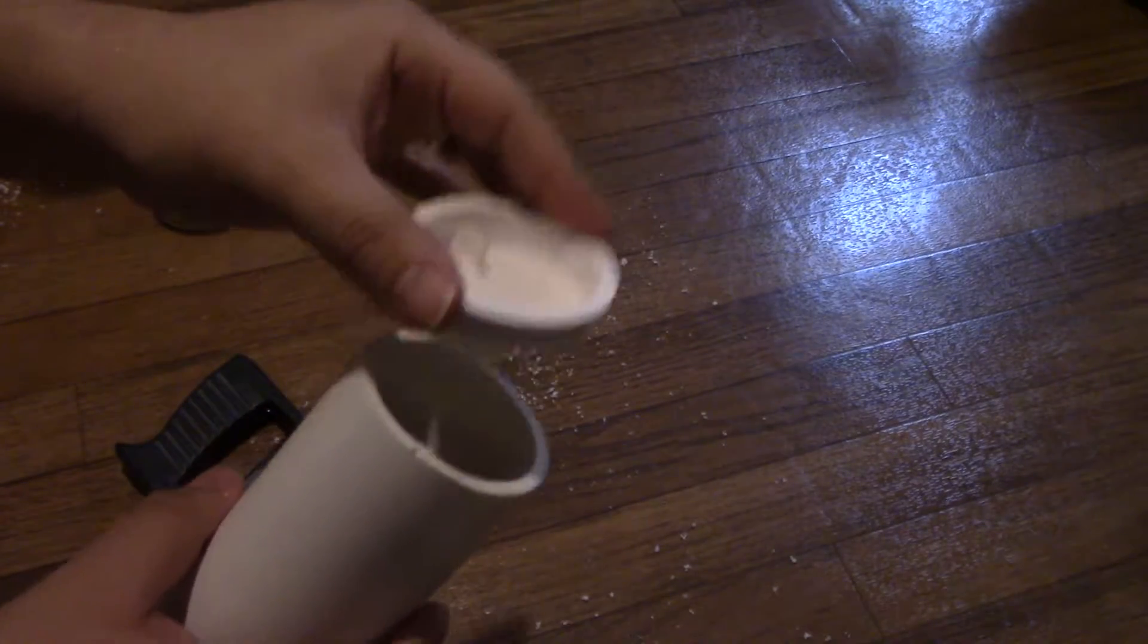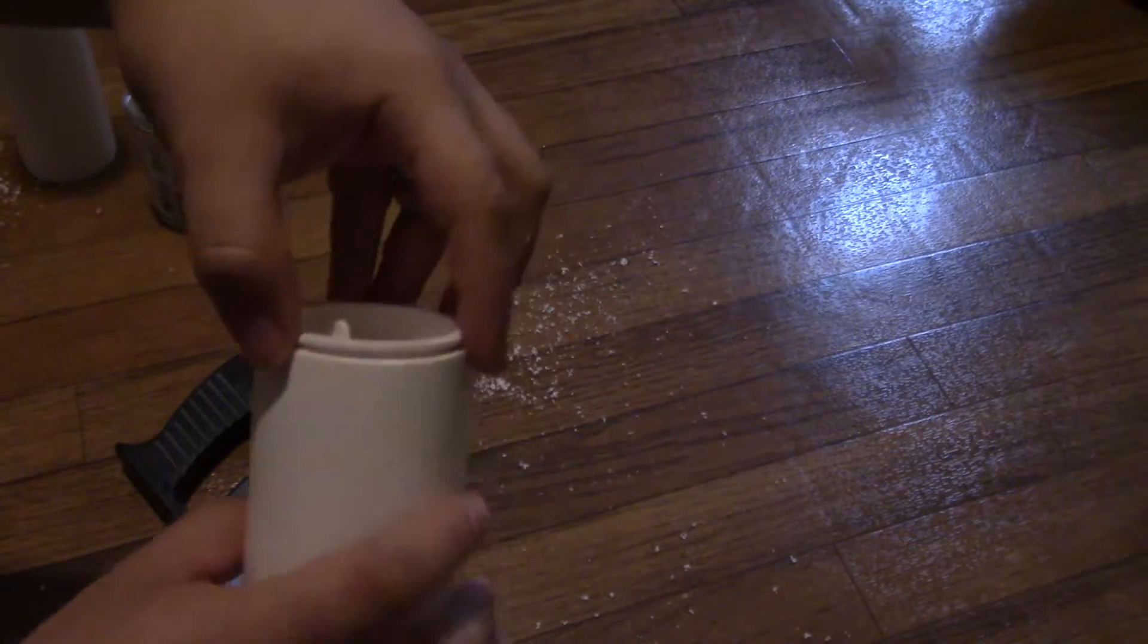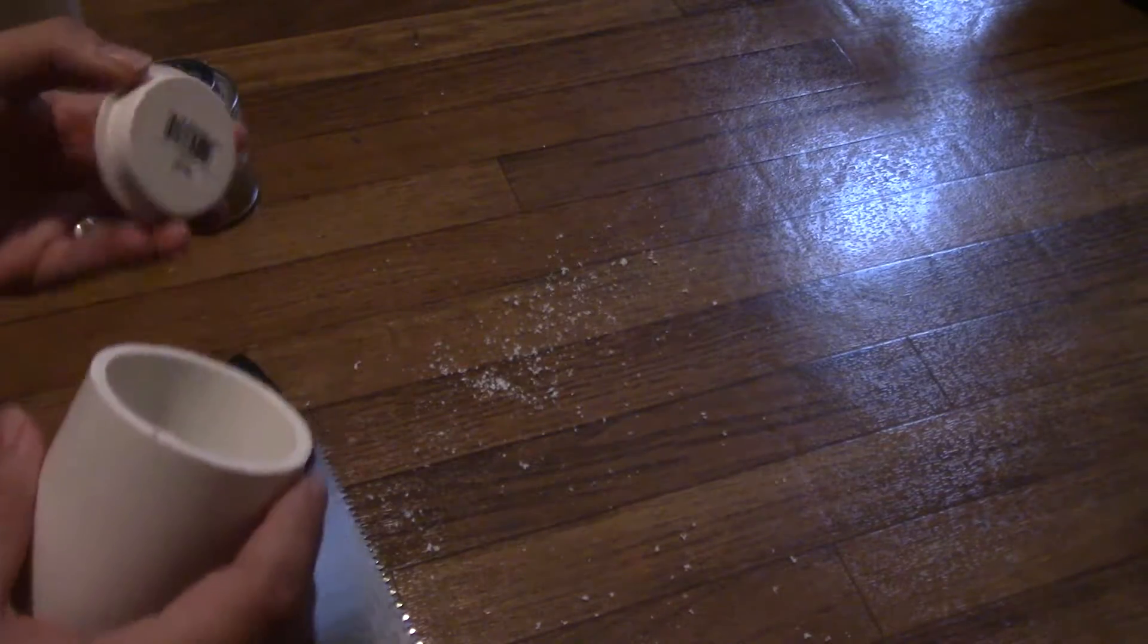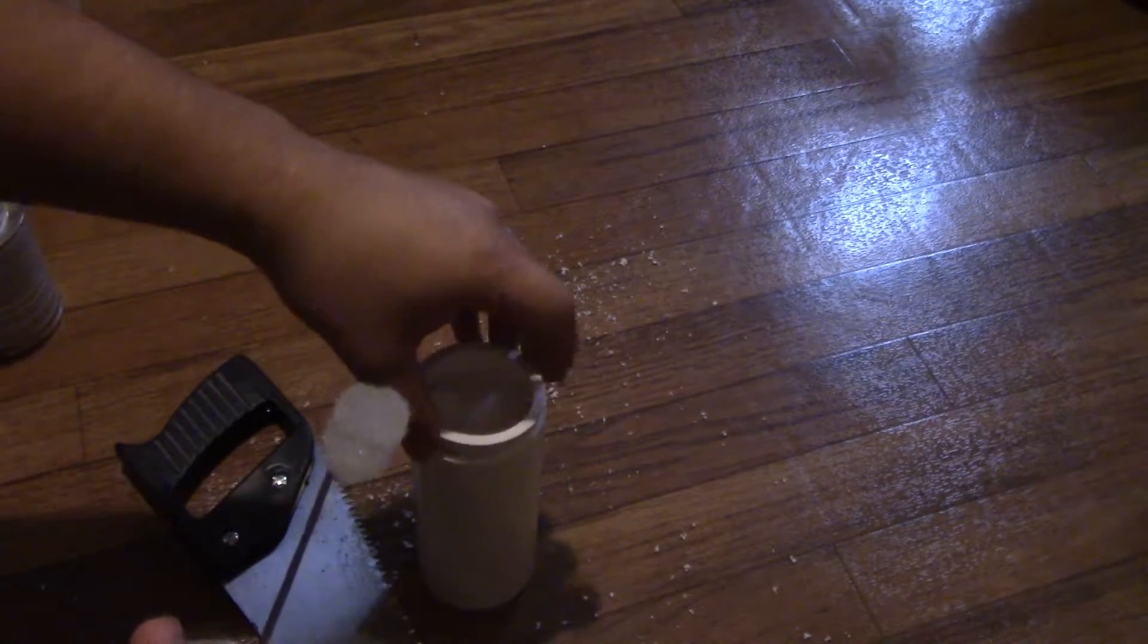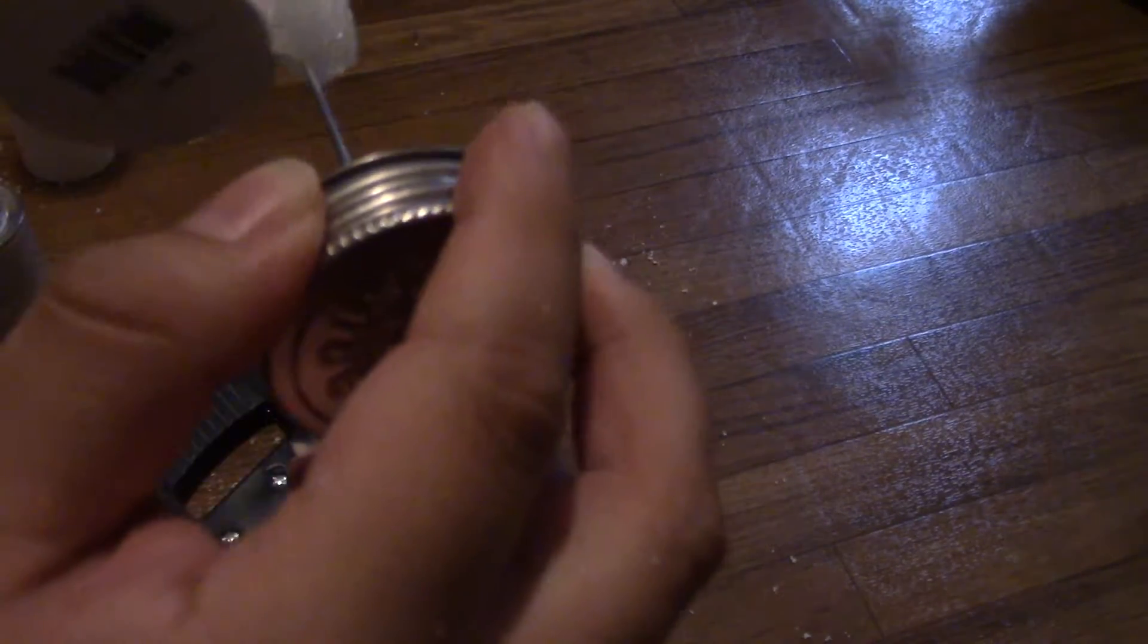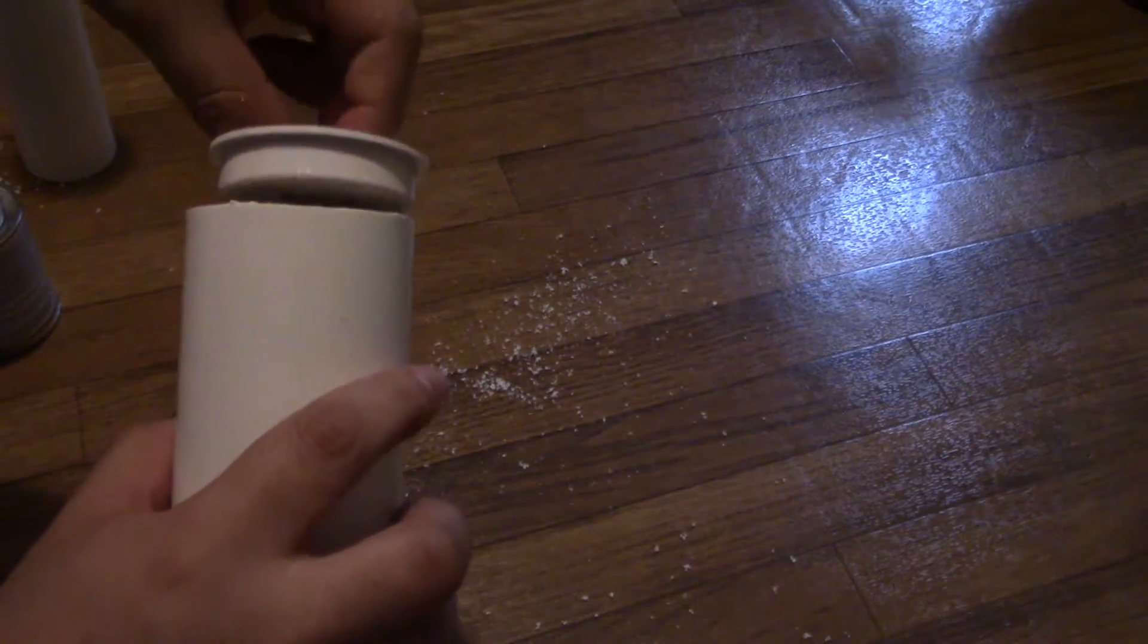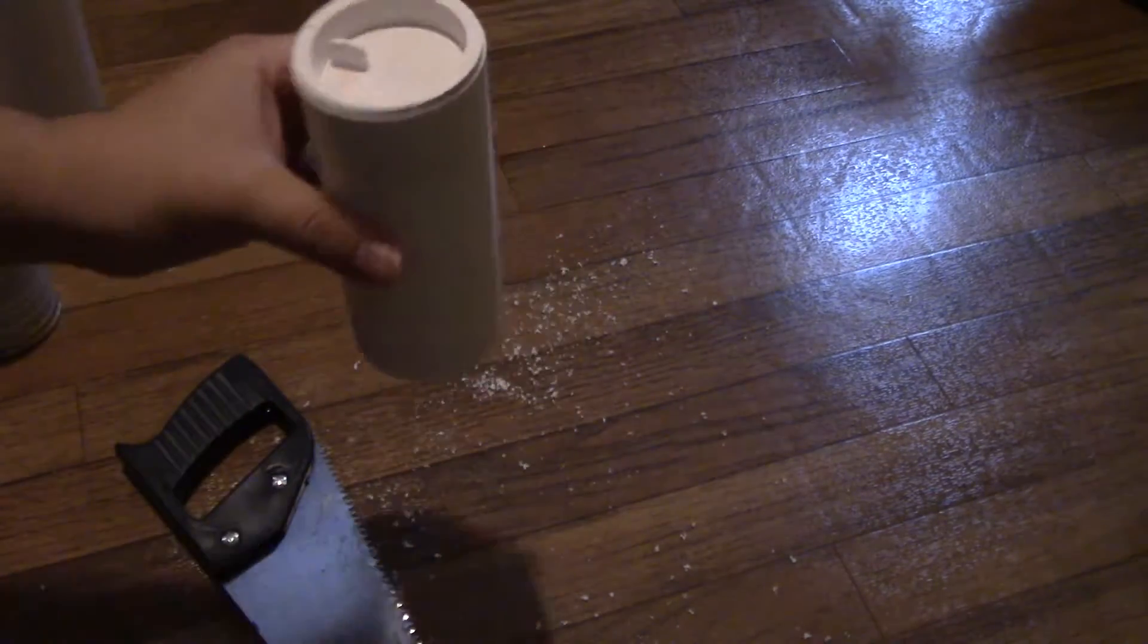So then you take your test cap and put it on there. And like I said it won't make a seal, so all you need to do is put some Gorilla Glue or in this case we're going to use some PVC cement. And just a little, just a little will do you. You just want that watertight seal. I'll leave that for a bit.